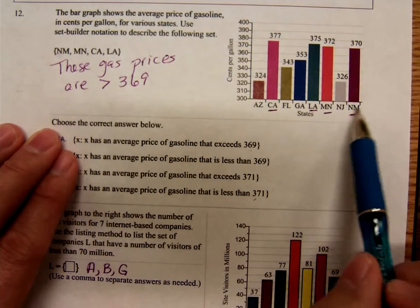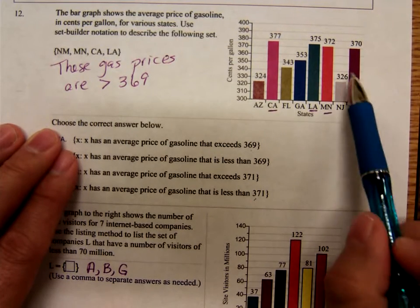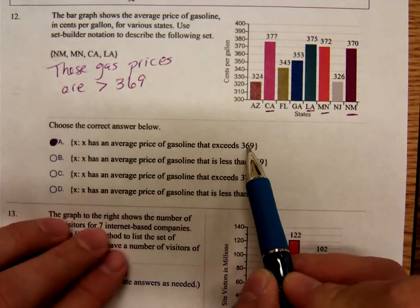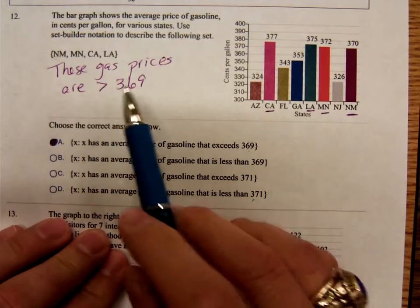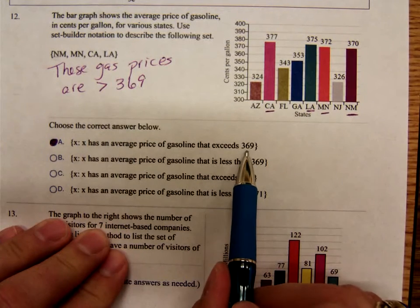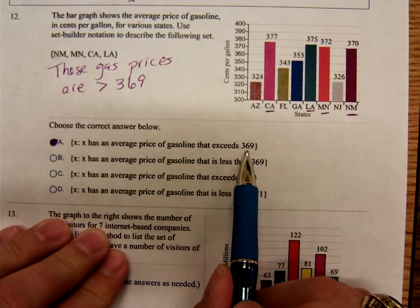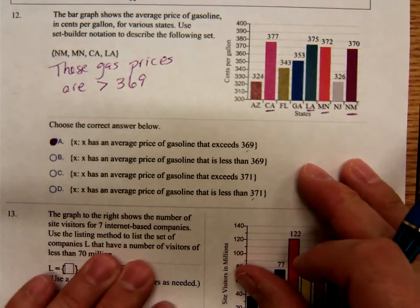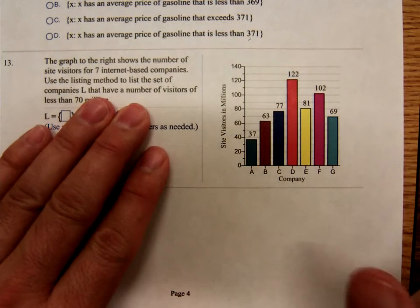This one here, New Mexico, has $3.70. So this one is, the gas price exceeds $3.69. So this is $3.69. Number 13.